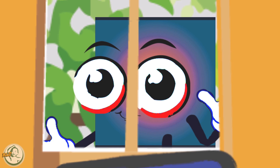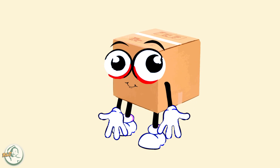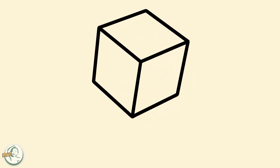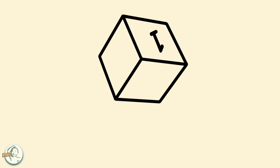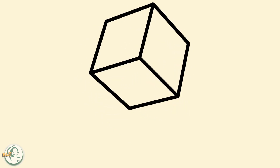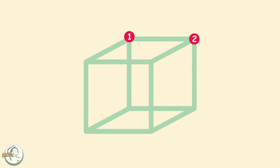Square was fascinated by the cube and how it was different from the square she knew so well. A cube is a shape that has six square faces, eight corners, and twelve edges.